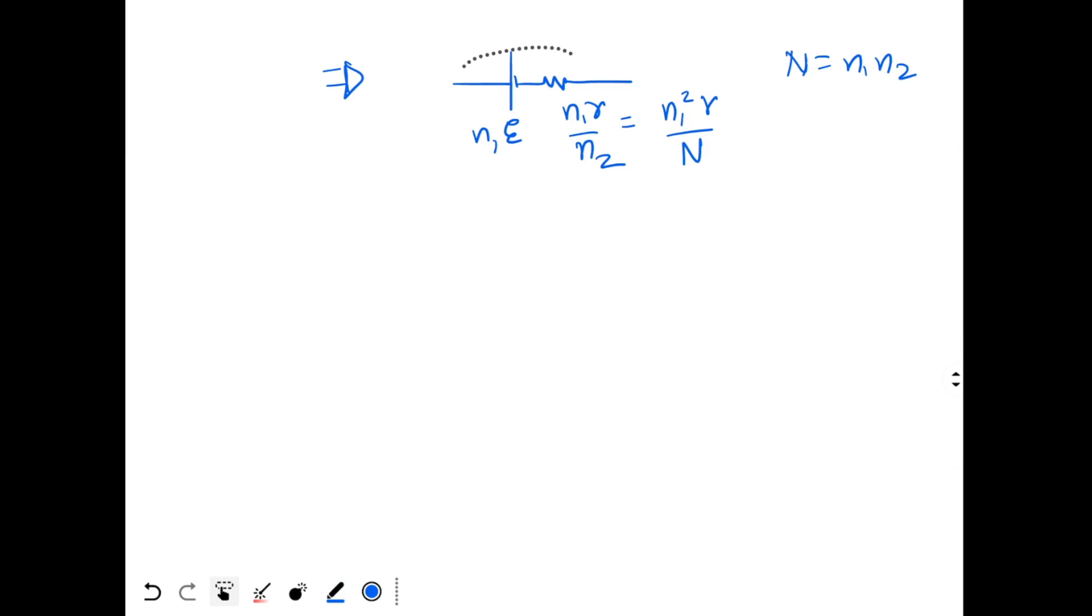So I just take this battery and put it with a resistor in series. So this is my external resistor R. Here I have N1E EMF and here I have N1 square r by N.